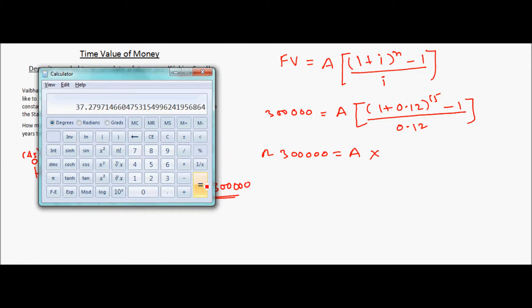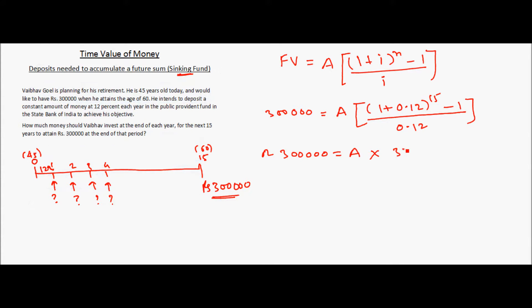So this is 37.279. Let us round it off to 2 decimal points, so 37.28. Or let us have A on one side.